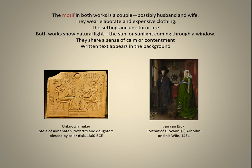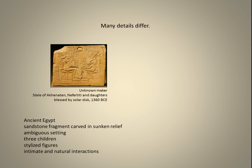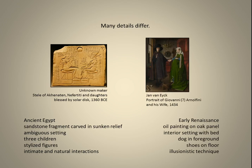Written text appears in the background, though many details differ. The first work is from Ancient Egypt: a sandstone fragment carved in sunken relief, with an ambiguous setting, three children, stylized figures, and intimate and natural interactions. The second is from the Early Renaissance: an oil painting on oak panel with an interior setting including a bed, a dog in the foreground, shoes on the floor, and an illusionistic technique.